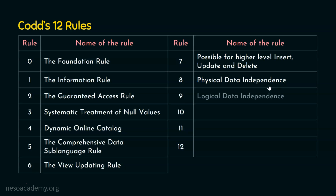Rule number 9 is logical data independence. While rule number 8 dealt with the physical aspect — changes in storage should not affect application-level access — rule number 9 states that application programs and terminal activities should be logically unimpaired when any modifications are done to the base table.